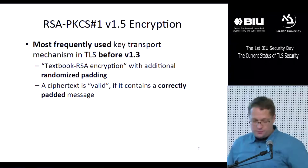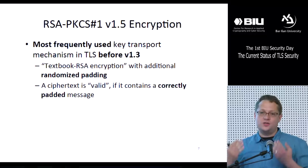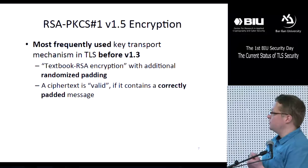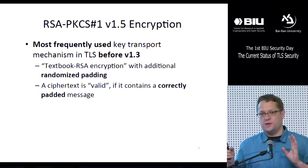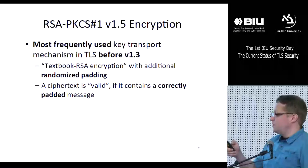I need two preliminaries before I can describe the attack. The first is the encryption scheme RSA PKCS1 version 1.5, or just RSA encryption for short — the most frequently used key transport mechanism in all TLS versions before TLS 1.3. If you're familiar with RSA encryption, this scheme is easy to explain: it's textbook RSA encryption except the encrypted message must have a certain structure. The message is prepended with random bytes to make encryption probabilistic, plus some constants. A ciphertext is valid if it contains a correctly padded message.